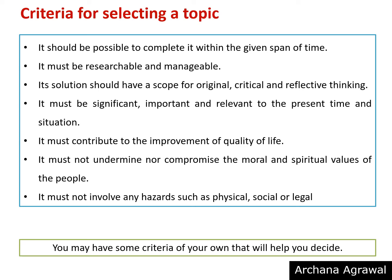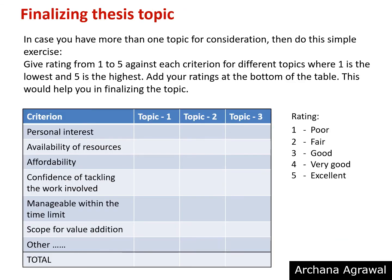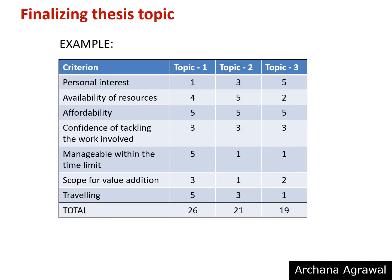You may have some criteria of your own that will help you decide. Kindly ponder on each of the above points before finalizing your topic. In case you have more than one topic for consideration and you are not able to make up your mind, then do this simple exercise. Give a rating from 1 to 5 against each criterion for different topics, where 1 is the lowest and 5 is the highest. For example, if your personal interest is more for topic number 3 and least for topic number 1, then you would give 5 to topic 3, 1 to topic 1, and an average 3 to topic 2.